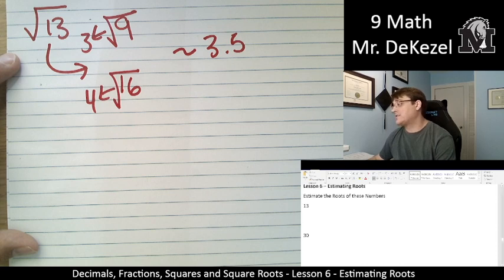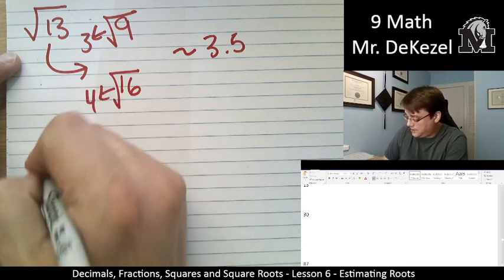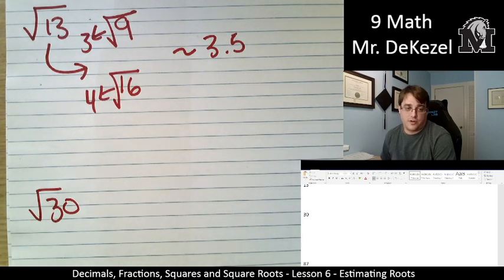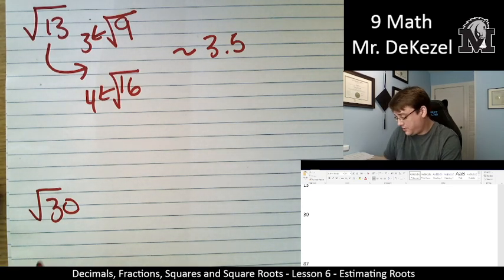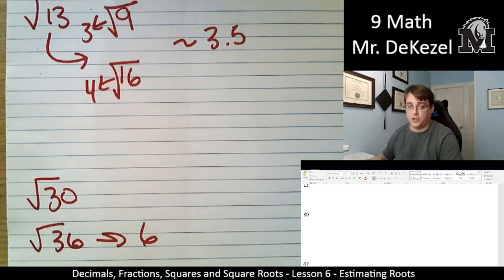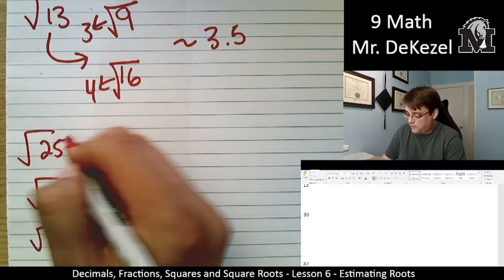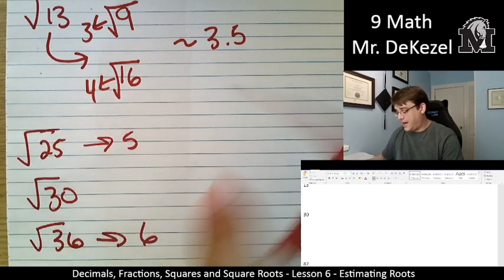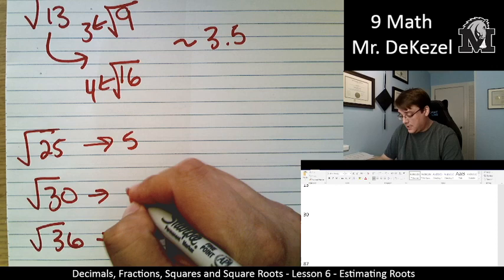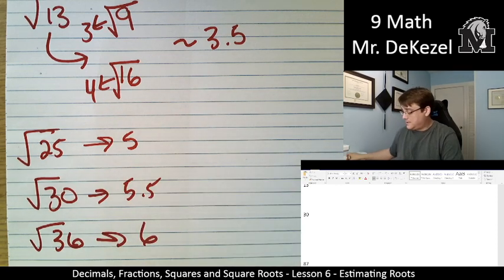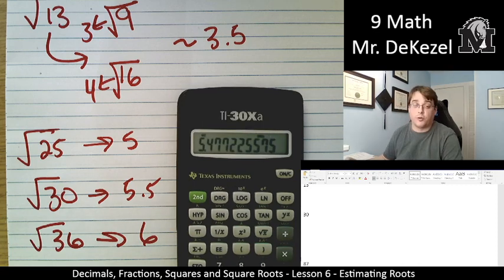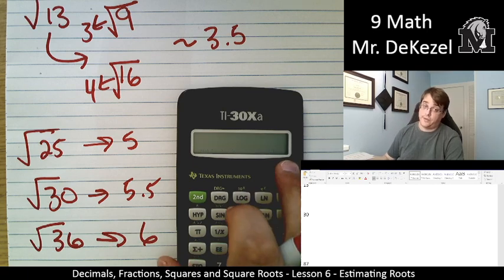The root of 30, we're going to think of numbers around the root of 30 that we know. Like we know the root of 36. The root of 36 is 6. And the one that we know that's below 30 would be 25. The root of 25 is 5. So we're again halfway between 5 and 6. So I would estimate that this would be 5.5. Let's again check in our calculator. We have square root of 30 equals 5.47. So we round up to one decimal. That's 5.5 and we got it exactly.